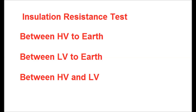Then the IR test is done between LV (secondary) to earth using a 500V IR tester, and between primary and secondary sides it is also done by a 500V megger. This insulation resistance test result shall be recorded and checked whether the result is acceptable or not.